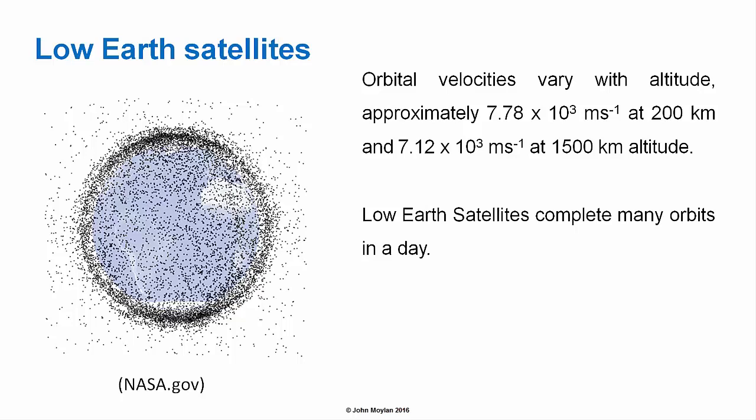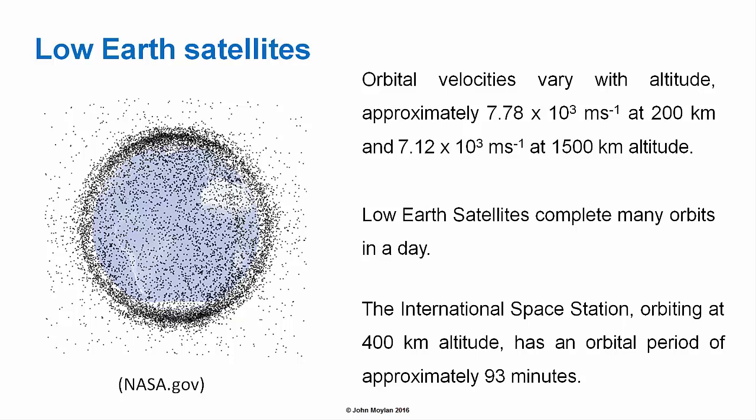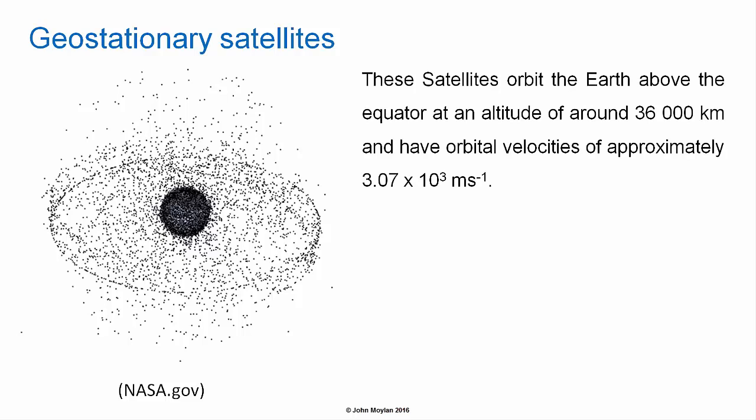Low Earth orbit satellites complete many orbits in a day. The International Space Station, for example, orbits at approximately 400 kilometers altitude and has an orbital period of approximately 93 minutes — about every hour and a half it completes one orbit of the Earth.